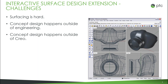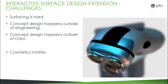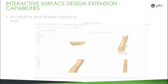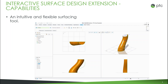It can be hard to translate artistic renderings into a CAD tool. But realistically, cosmetics matter — whenever you're trying to differentiate a product, it's important to make sure it looks really good and that the customer likes the design. That's why PTC decided to add the Interactive Surface Design Extension to Creo, to help address that gap and assist with surfacing designs. It has an intuitive and flexible surfacing tool with a familiar Creo user interface.